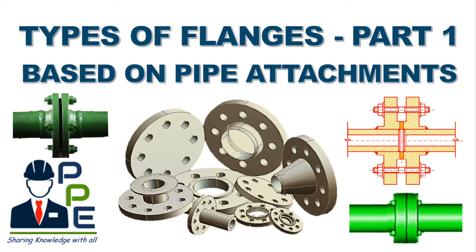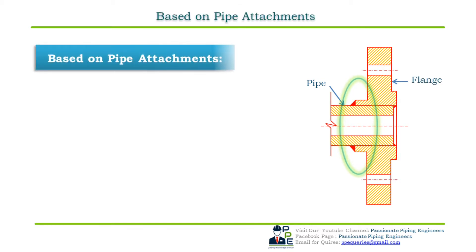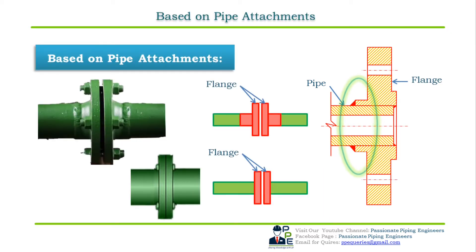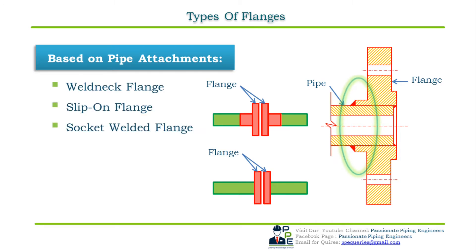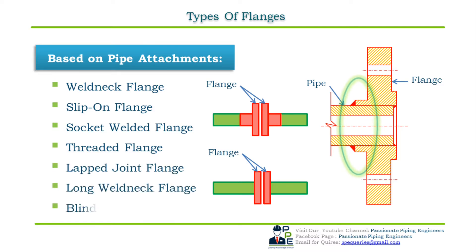Pipe attachments with flanges means how the flange is fitted or connected to the pipe — whether it is welded or threaded, and if welded, which type: butt welded or socket welded. The type of flange used for a piping application depends mainly on the required strength of the joint. Standard types based on pipe attachments are: weld neck flange, slip-on flange, socket welded flange, threaded flange, lap joint flange, long weld neck flange, and blind flange.